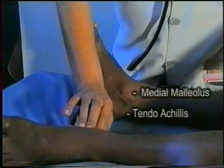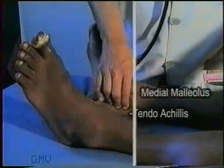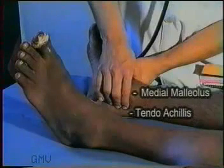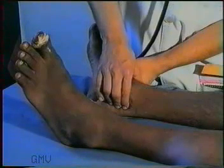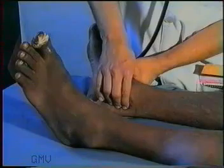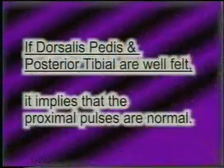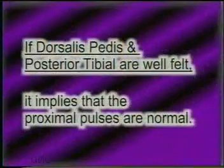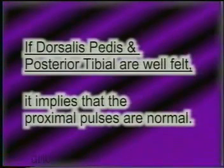Palpate the posterior tibial artery midway between the medial malleolus and tendo Achillis, against the calcaneum, keeping the foot dorsiflexed and inverted. If dorsalis pedis and posterior tibial are well felt and normal, it implies that the proximal pulses are bound to be normal.